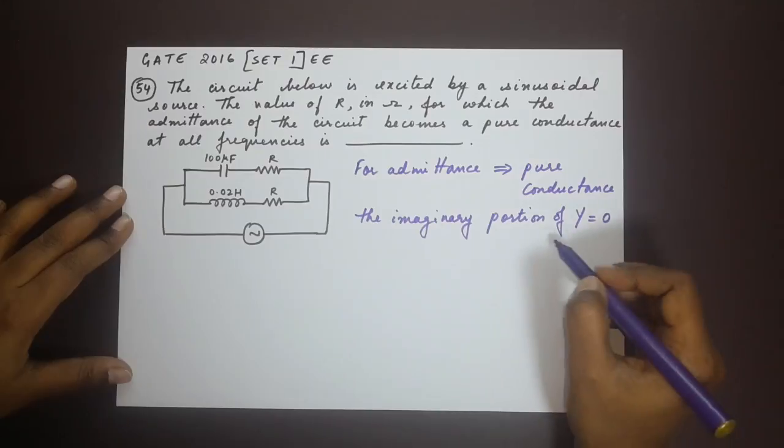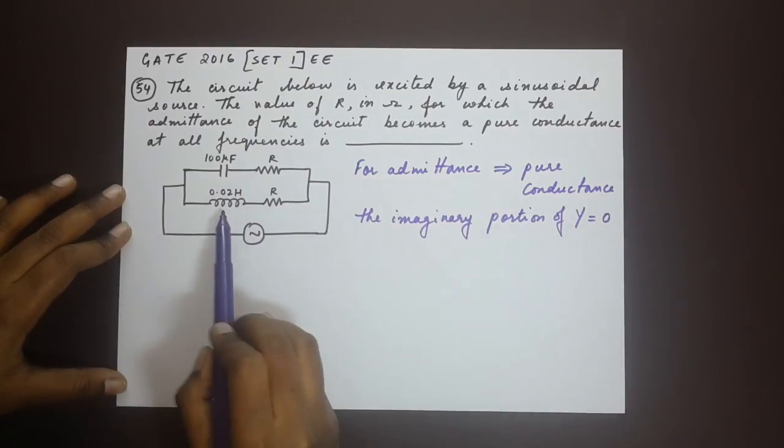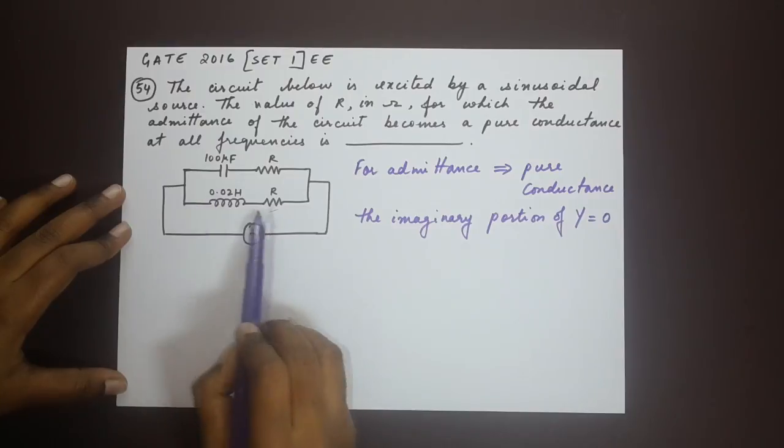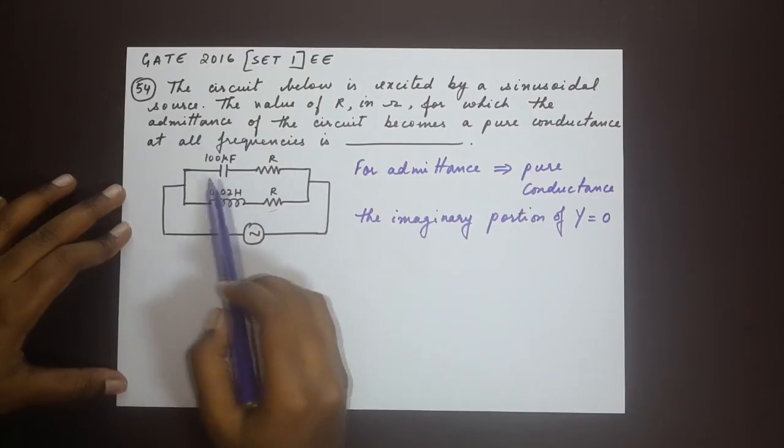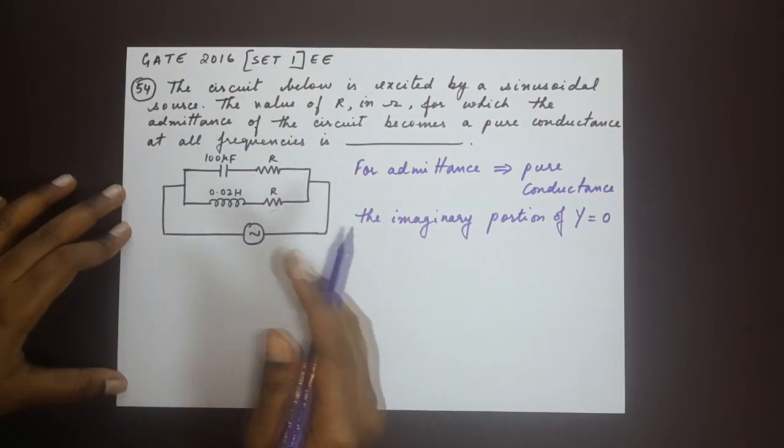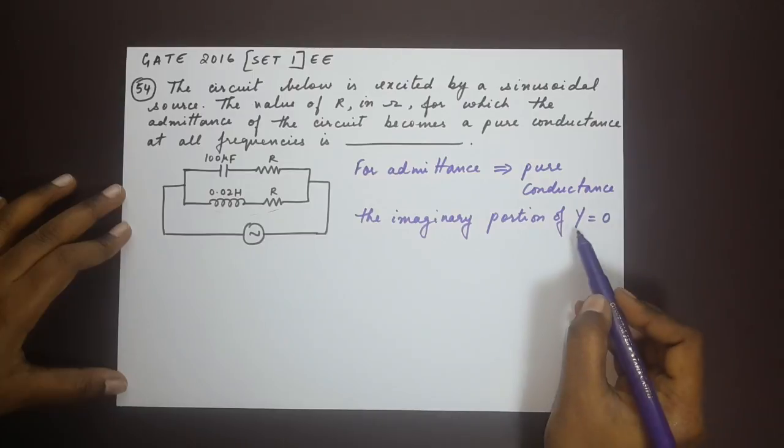Now let us write down the equation for the admittance y for the terms here for each of these branches. We have one branch with 0.02 Henry and R and another branch with 100 microfarad and R. Let us first without actually substituting the values of the capacitor and the inductor, let us just use L, C, and R and try and write down an equation for y.